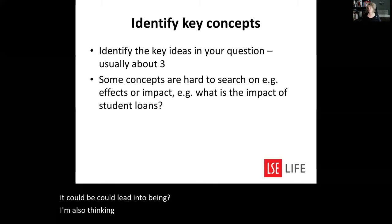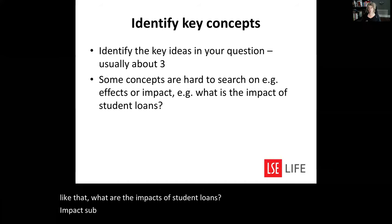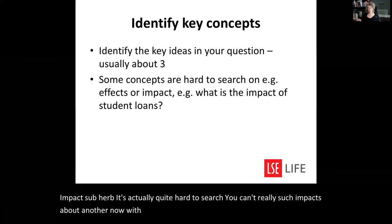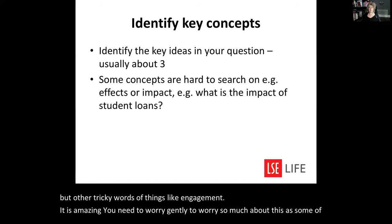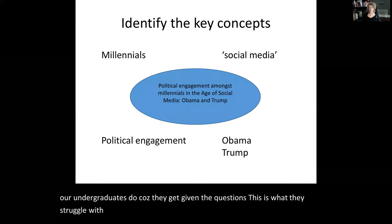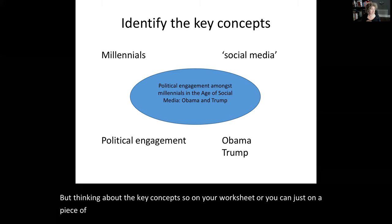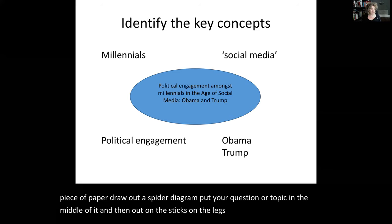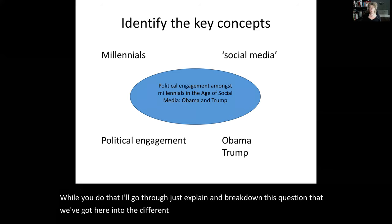Thinking about your question: if you write something like 'what is the impact of student loans,' 'impact' is actually quite hard to search — you can't really search 'impact' without another noun with it. So 'student loan impact' would be an area to search. Other tricky words are things like 'engagement.' On your worksheet, or just on a piece of paper, draw a spider diagram, put your question or topic in the middle, and on the legs outside put your main concepts.